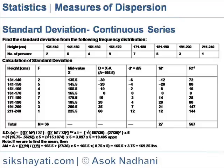So, we create a table. The first column shows the range. The second is the number of persons, that is frequency. The third column shows the mid-values of the range. The fourth is deviation D from the arithmetic mean, that is deviation from the value 165.5.